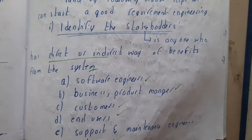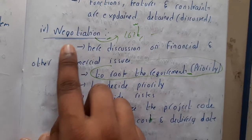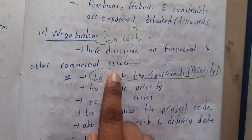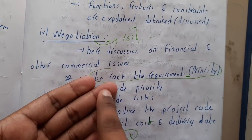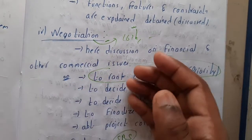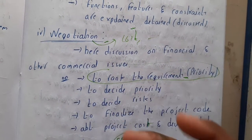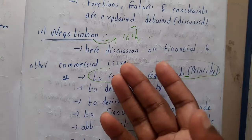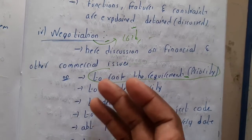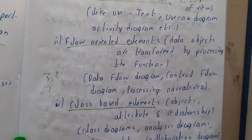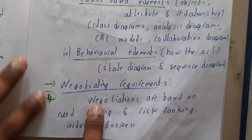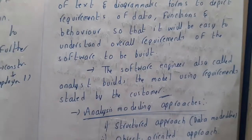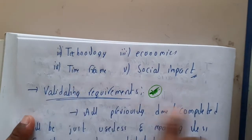In negotiation, we will be discussing about the financial and commercial issues. Basically, you will be asking the client to sort the order in which the requirements are to be done — what should be the highest priority one, what should be the least priority one. You will also discuss about the project timeline, budget, and any kind of risks — how to solve them if a risk occurs. Negotiations are based on need ranking and risk ranking, and include business, technology, economic, timeframe, and social aspects.